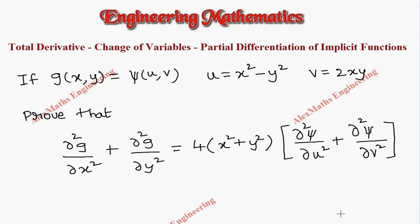Hi students, this is Alex here. g(x,y) is given as ψ(u,v), where u = x²-y² and v = 2xy. We have to prove the expression: ∂²g/∂x² + ∂²g/∂y² = 4(x²+y²)(∂²ψ/∂u² + ∂²ψ/∂v²).